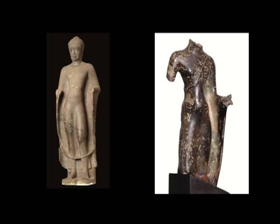Coexisting with this Vishnu cult statuary, a little bit north in Vat Romlok, there were Buddhistic sculptures. The one on the right you can see in the exhibition upstairs — it is a standing Buddha from Vat Manon. You can see that same graceful, slender, very spiritual expression very similar to a stone sculpture, much larger, which comes from Vat Romlok in the Angkor Borei region, both of the 7th century.